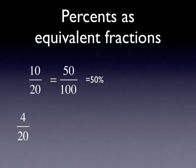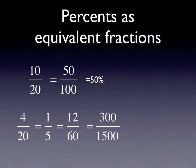Similarly, I can think about a whole slew of different equivalent fractions. Four twentieths — four out of every twenty — is the same thing as one-fifth, one out of every five. That's the same thing as twelve-sixtieths, and the same thing as three hundred fifteen-hundredths. All of these are the same thing as twenty one-hundredths. All of these fractions are equivalent. The last fraction in the list, twenty over one hundred, is a percent fraction — twenty for every hundred — twenty percent. So all of those fractions are equivalent to twenty percent.